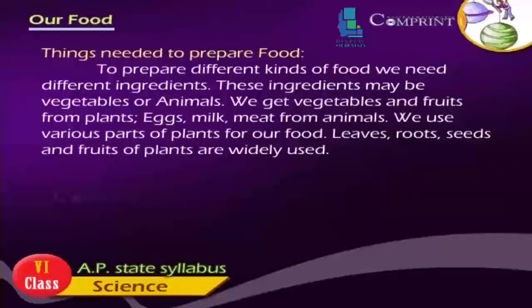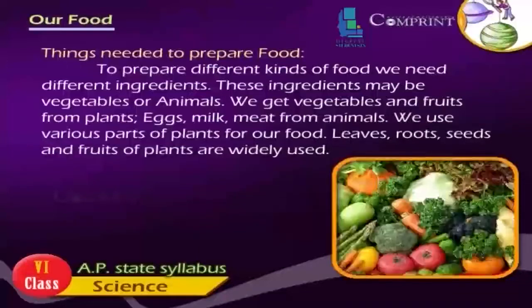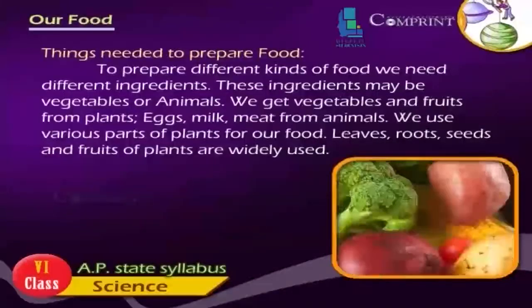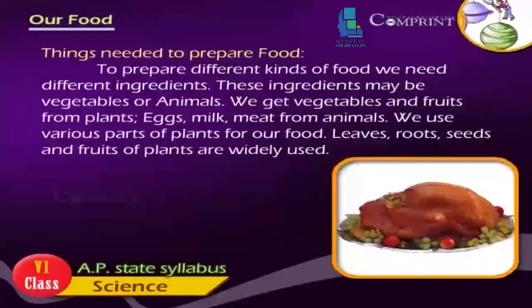Things Needed to Prepare Food: To prepare different kinds of food, we need different ingredients. These ingredients may be vegetables or animals. We get vegetables and fruits from plants, eggs, milk, and meat from animals.